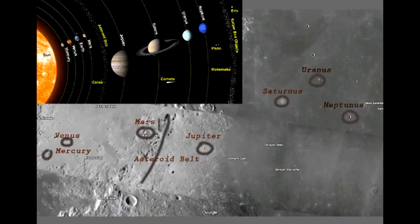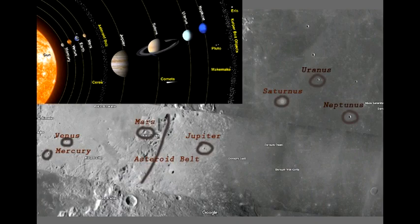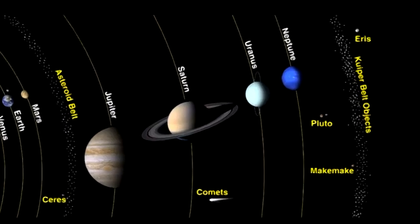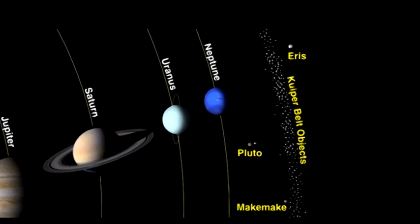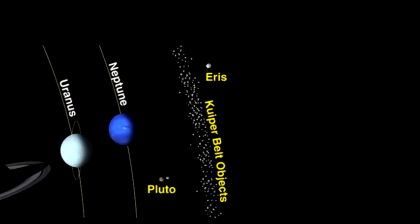Here they are all the planets but there was a little surprise at the end because when you move to the right what do you see at the edge of the universe, the Kuiper belt objects.